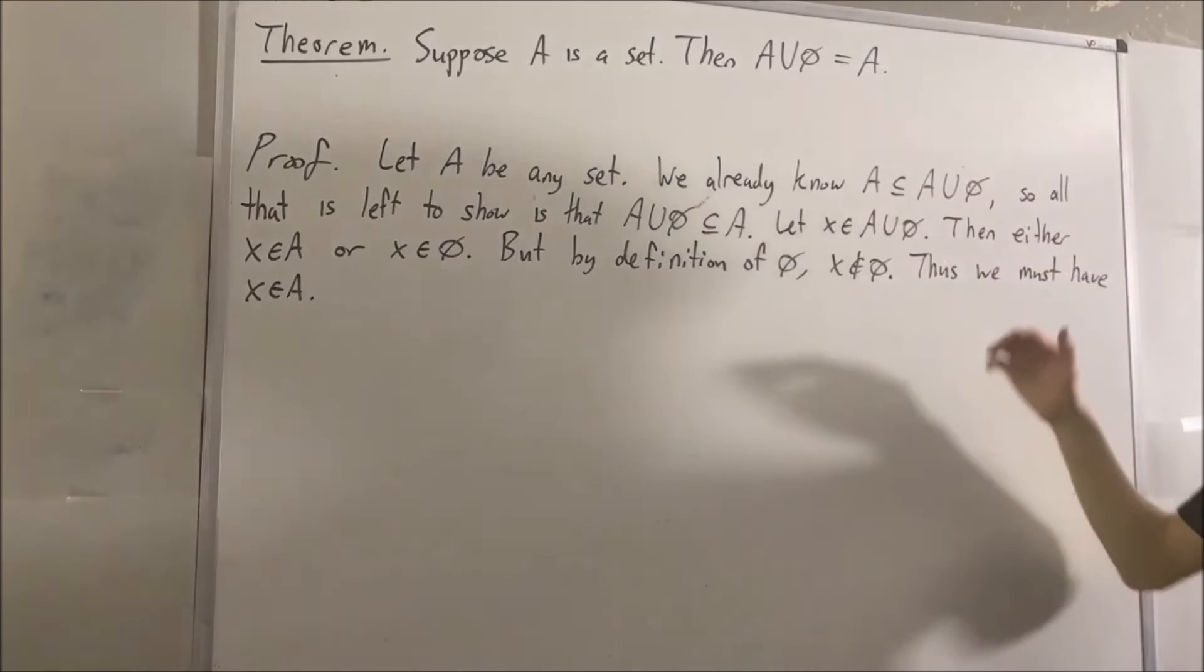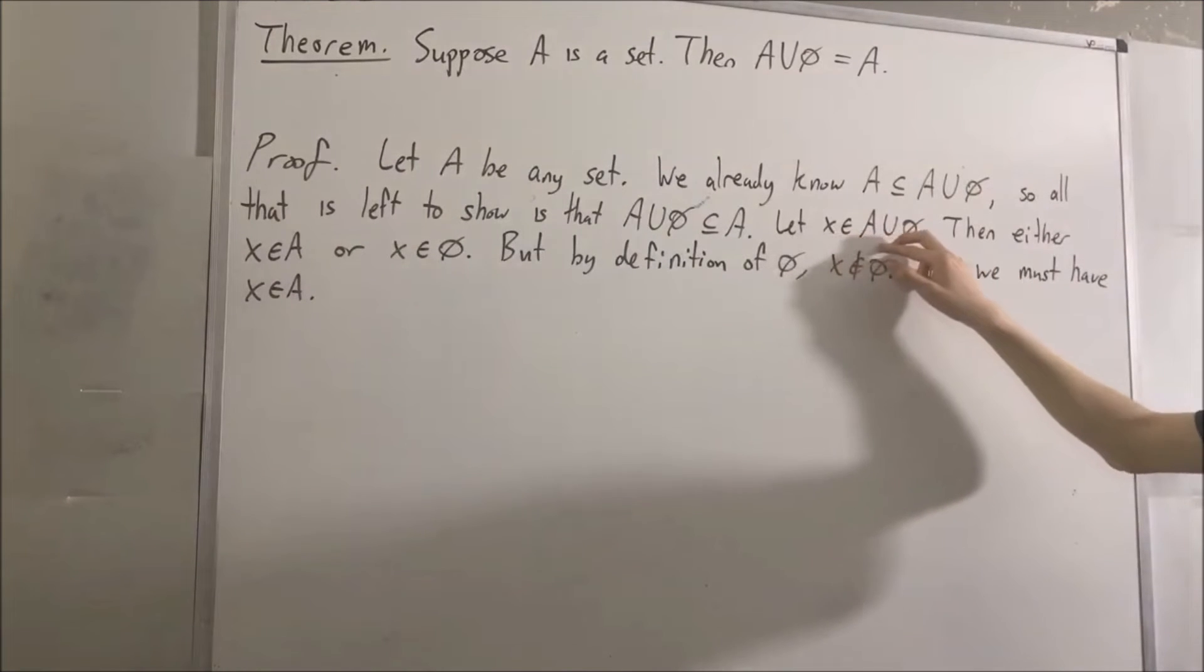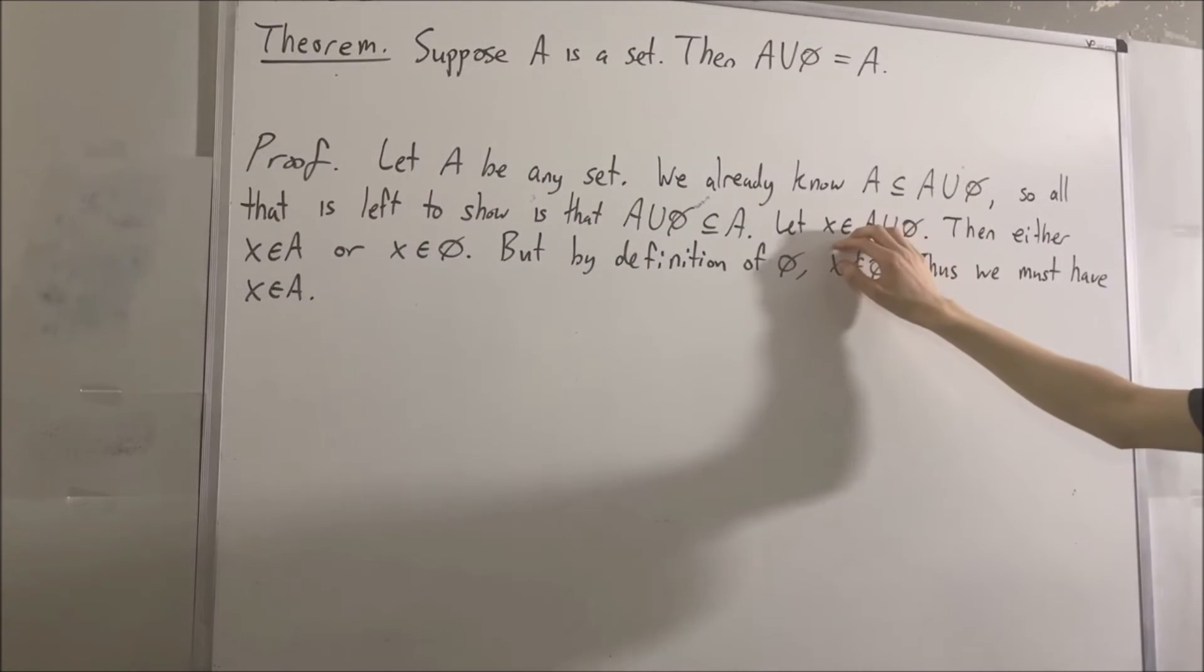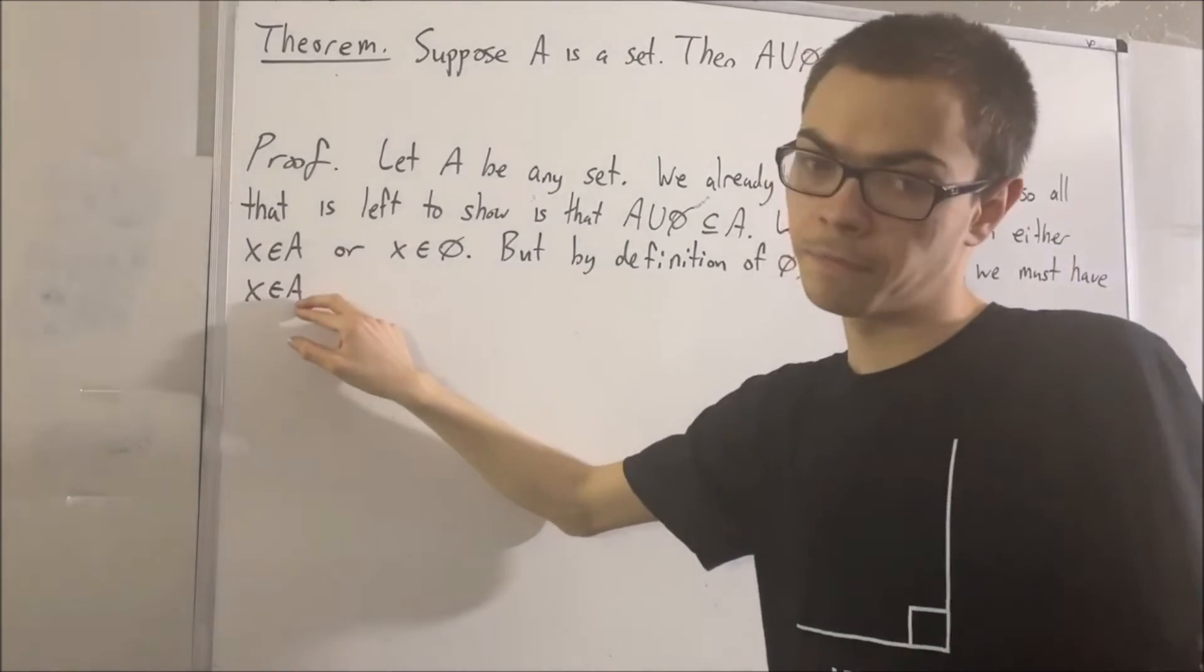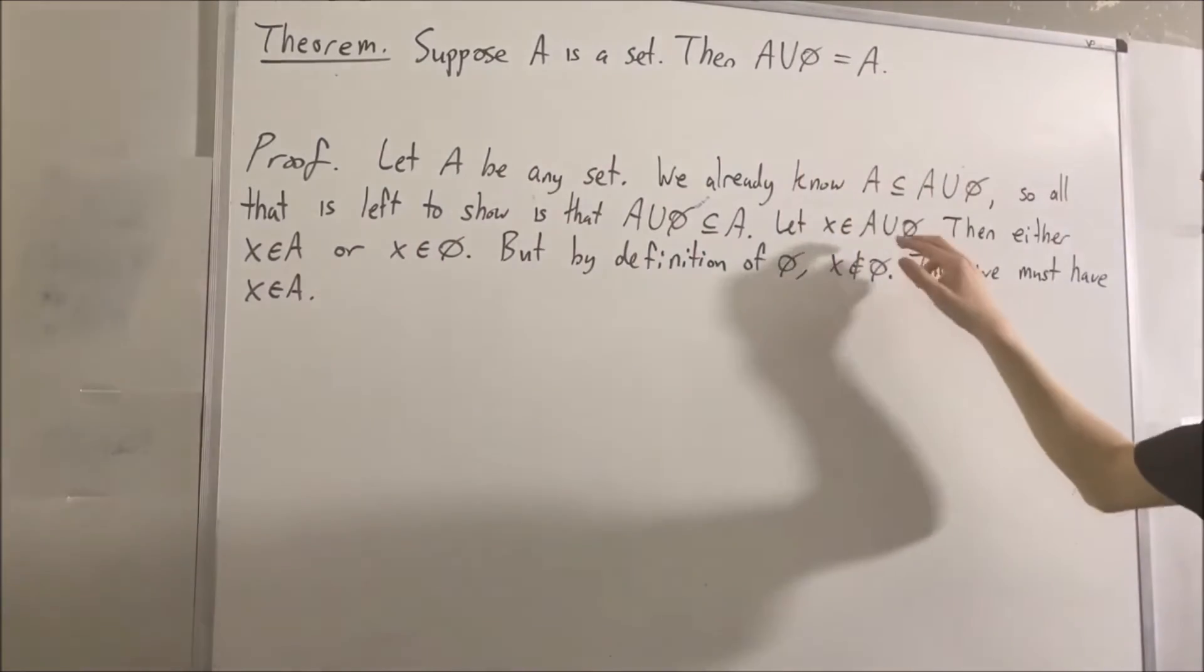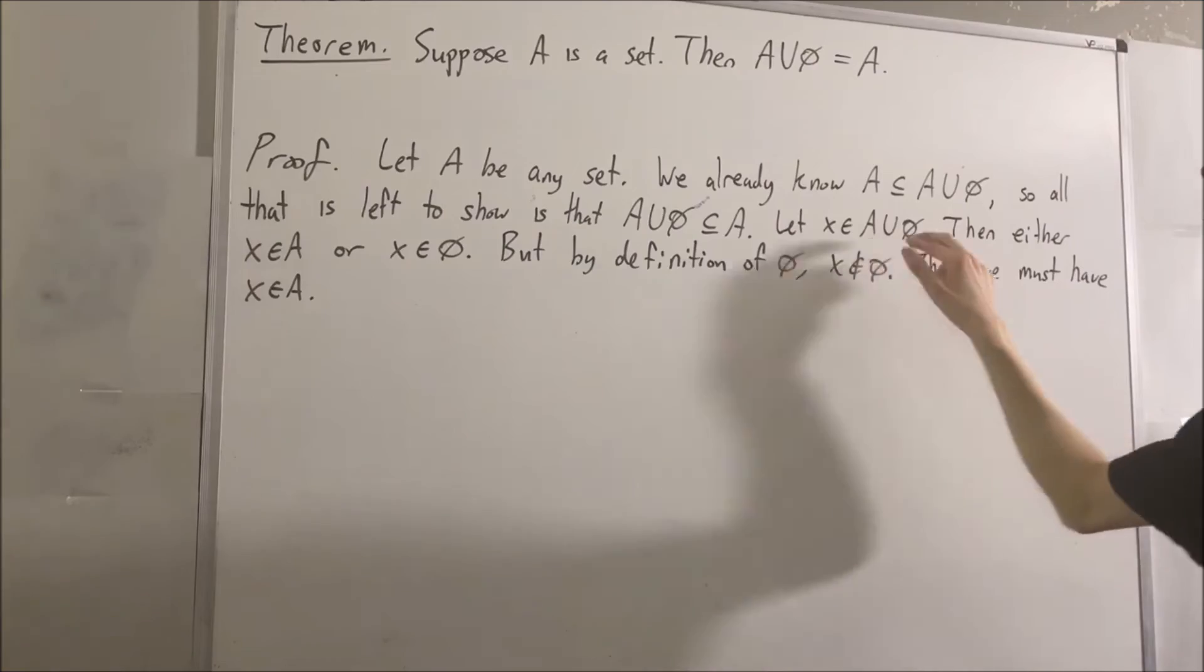Now putting this together, we started with an arbitrary element of A union the empty set, and we show that same element must also be in A. Therefore, every element of A union the empty set is also in A.